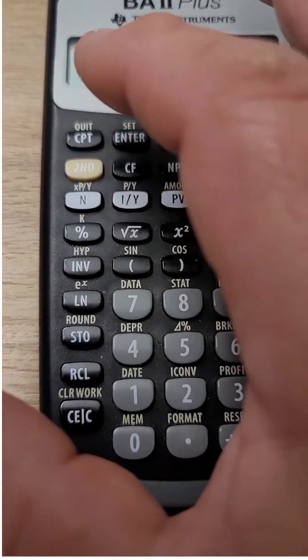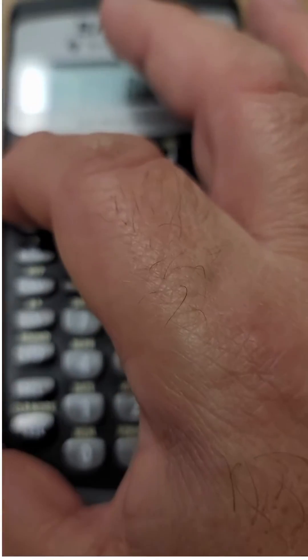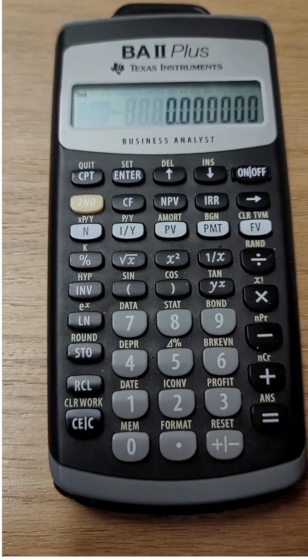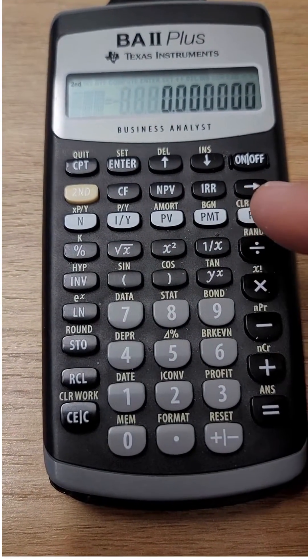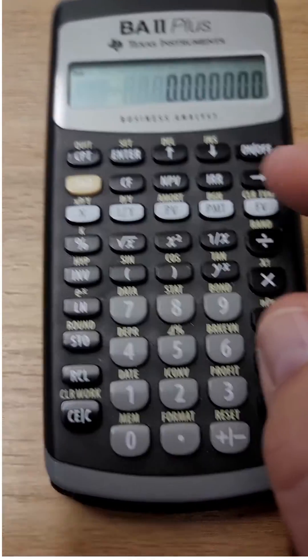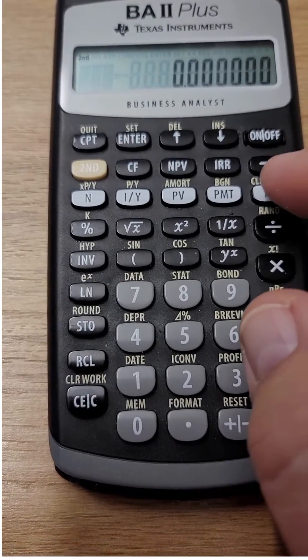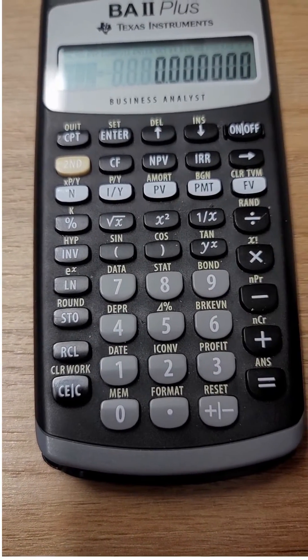You must hit the second button, which is this yellow button here, and this CLR-TVM button here above the FV clears the time value of money.